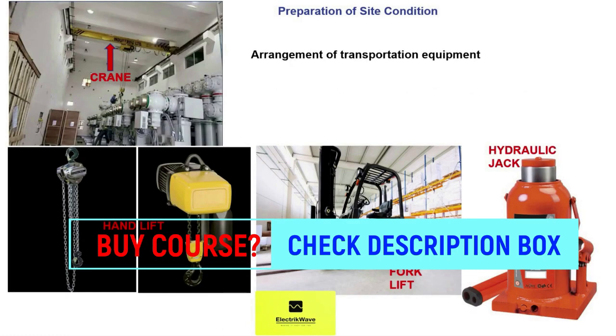Here we will understand the arrangement of transportation equipment, which includes crane, hand lift, fork lift, steel pipes, and hydraulic jack.